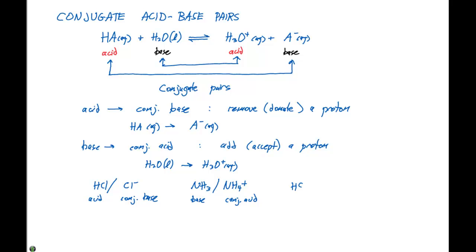If we have HS- as our acid, in order to get to the conjugate base, we have to remove a proton, that's gonna be S2-. And if we have HS- acting as a base, H2S is going to be the conjugate acid. Because going from a base to a conjugate acid, we have to accept the proton.